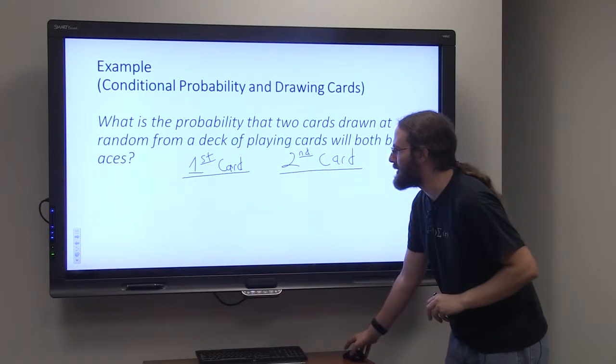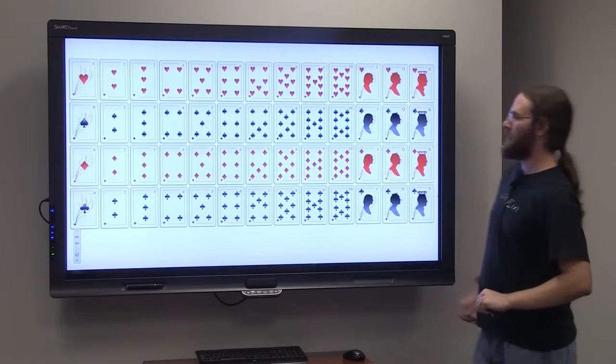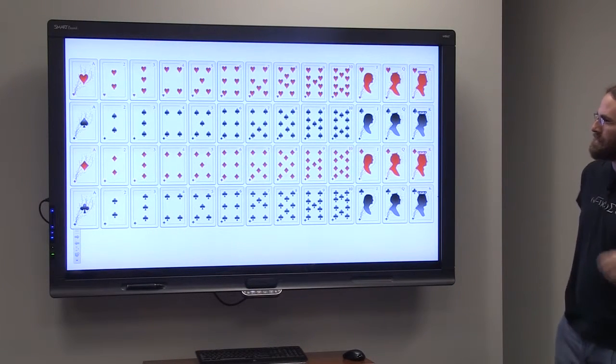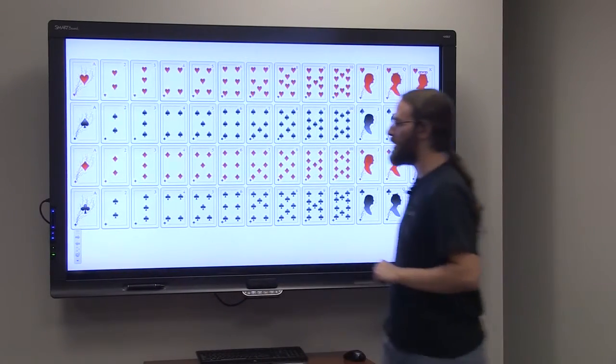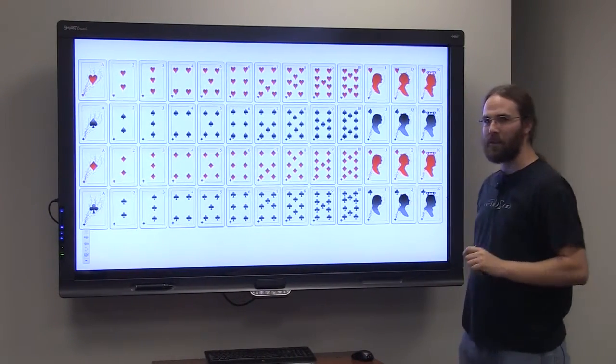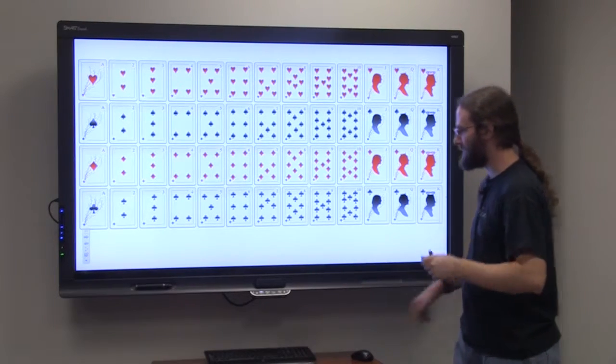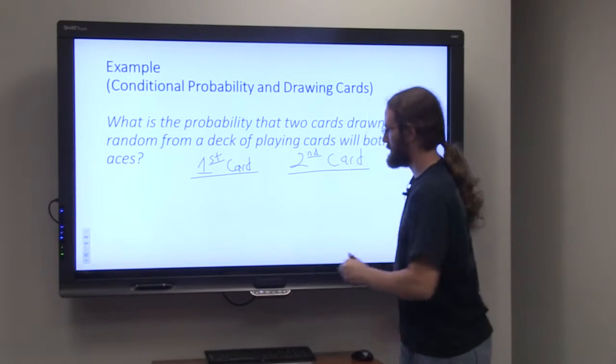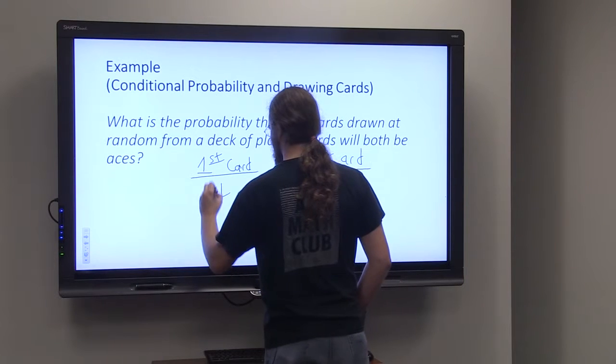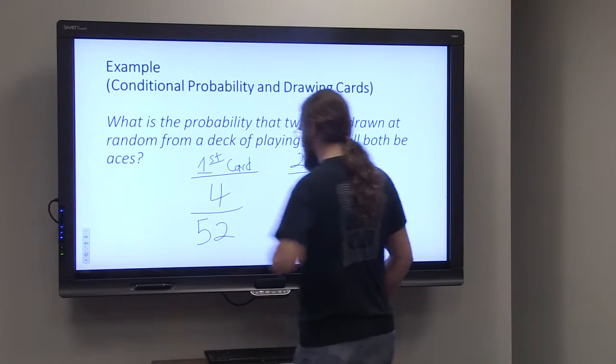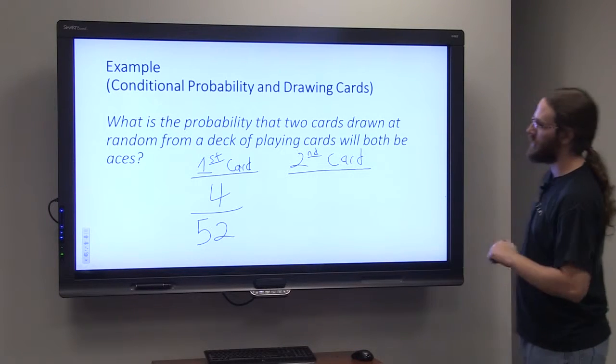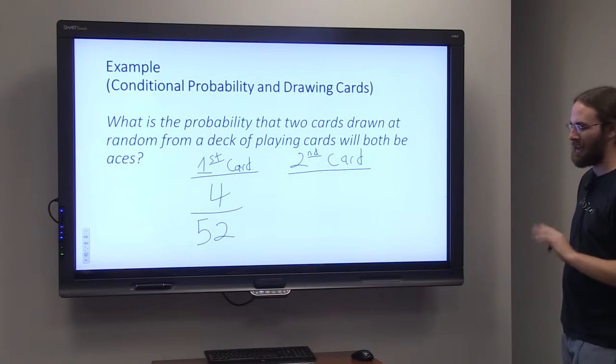If you look at a standard deck of playing cards, I have a standard deck right here, you see there are four aces out of 52 cards. So the probability of randomly drawing an ace would be four out of 52, and you can reduce that to one out of 13, but I'm not going to yet.